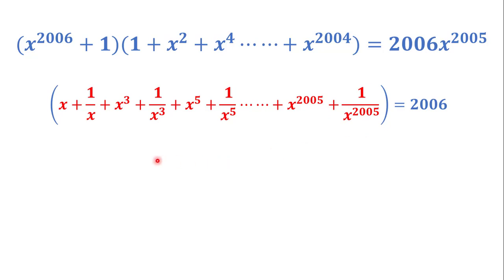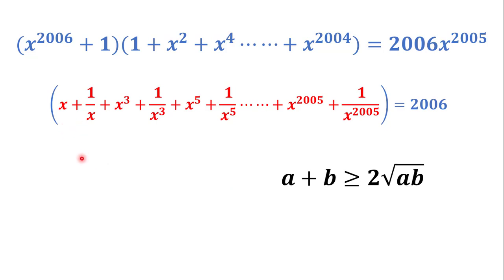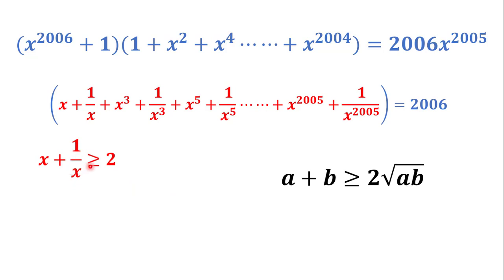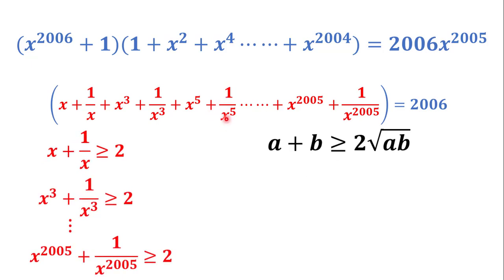Now we want to use the AM-GM inequality. For two non-negative quantities a and b, the AM-GM inequality states a + b ≥ 2√(ab). So we can write x + 1/x ≥ 2, x^3 + 1/x^3 ≥ 2, x^5 + 1/x^5 ≥ 2, all the way up to x^2005 + 1/x^2005 ≥ 2.